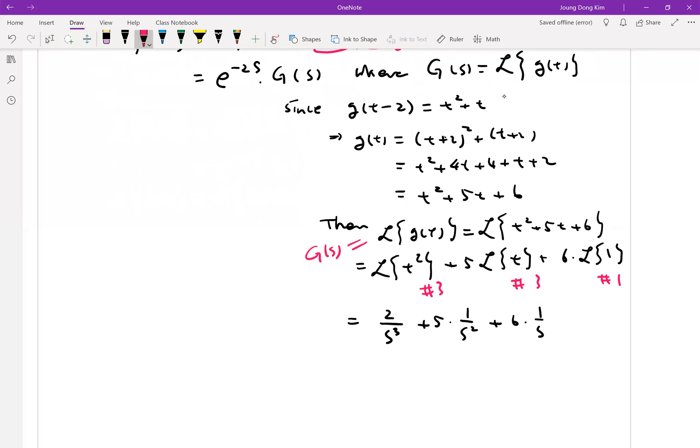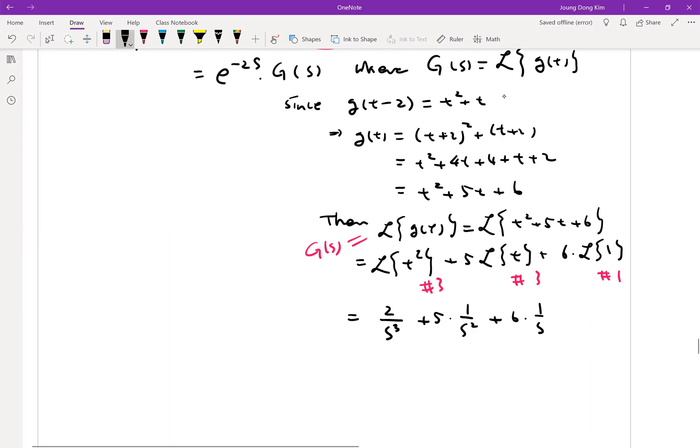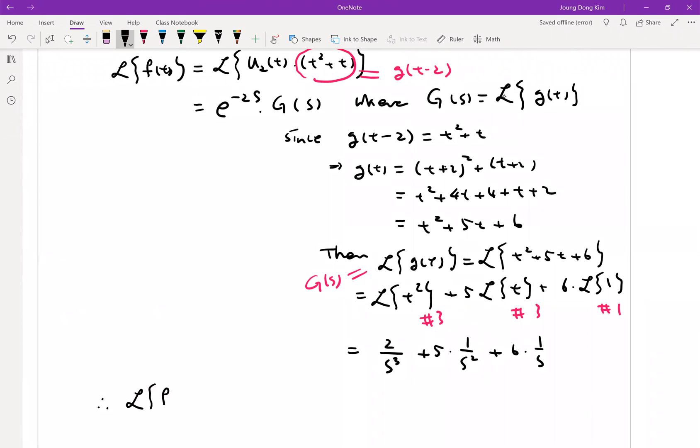Then we can plug it back into the inverse transform. So now we can write this: Laplace transform of my function f of t is equal to e to the minus 2s times 2 over s cubed plus 5 over s squared plus 6 over s.